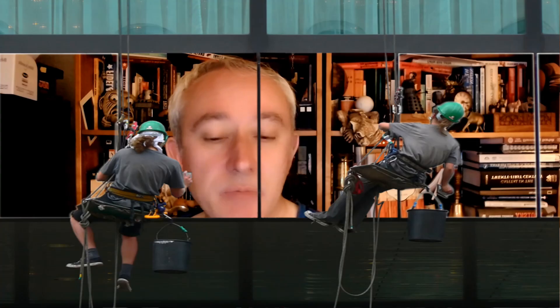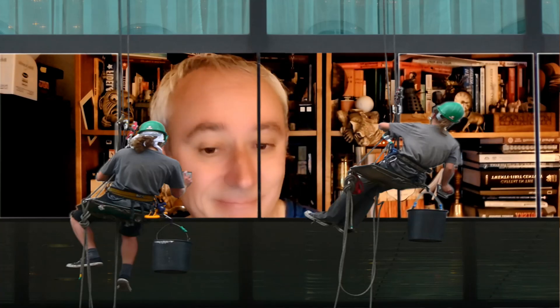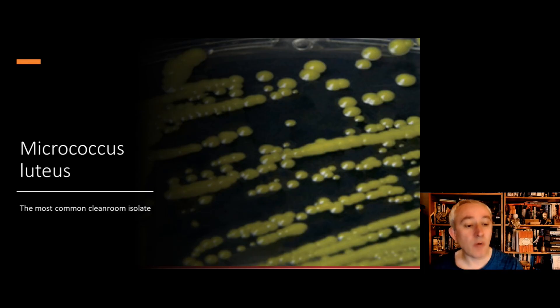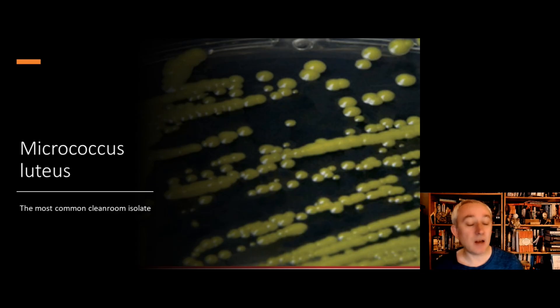Looking out the window upon the world, there are people everywhere, and people present a risk to clean rooms. The primary bacterium recovered from clean rooms is one called Micrococcus luteus. Hello, Tim Sandel here, back with another clean room related video. This video is going to look at the most common microorganism recovered from aseptic areas where there is a personnel presence — a bacterium called Micrococcus luteus.